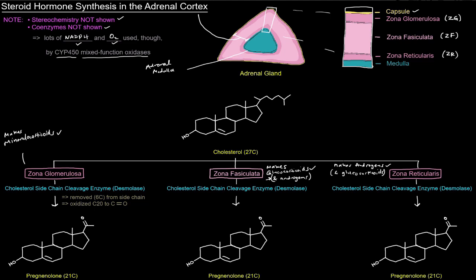Now let's get into the reactions. We're making steroid hormones, and steroid hormones are steroids, so they come from cholesterol because cholesterol provides a steroid nucleus — the A, B, C, D ring combination — that is necessary to build all these different steroids. However, cholesterol is not really committed to steroid hormone synthesis specifically; it can give rise to all different types of steroids, and steroid hormones are just a subset of those.